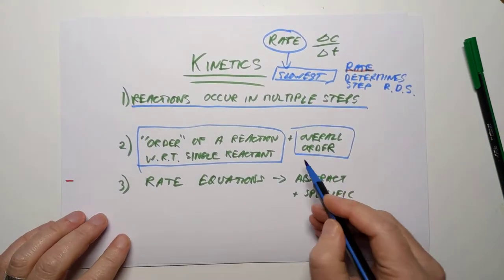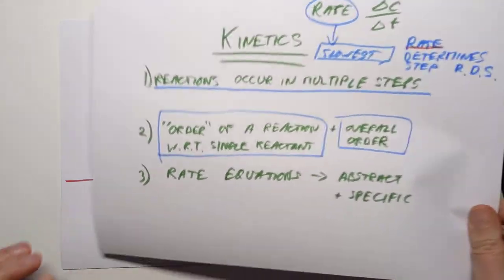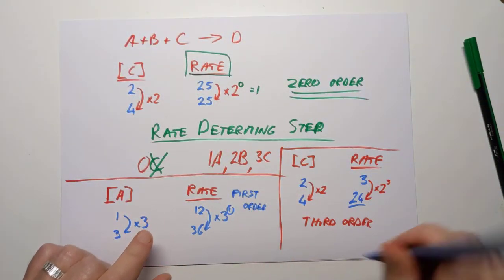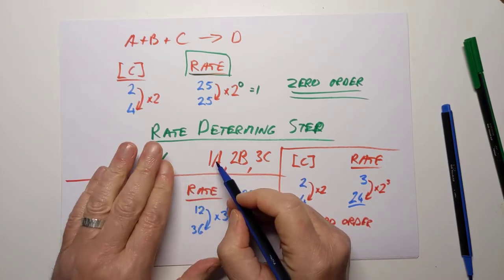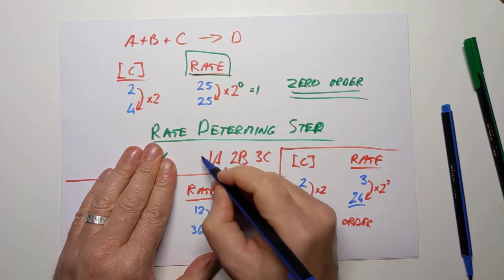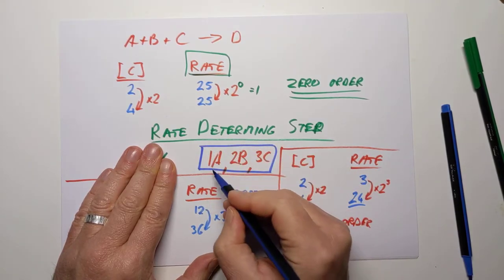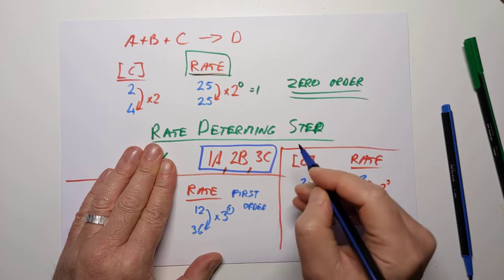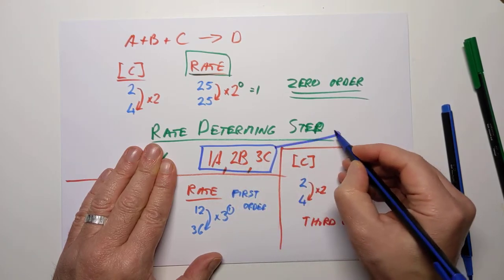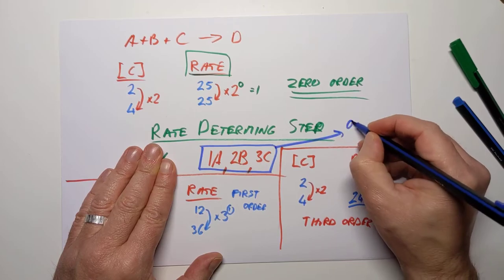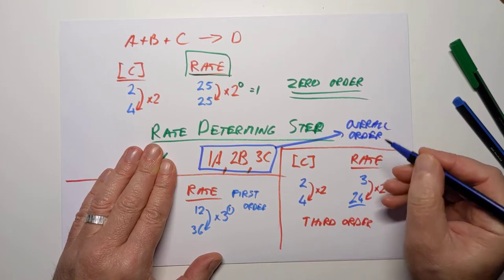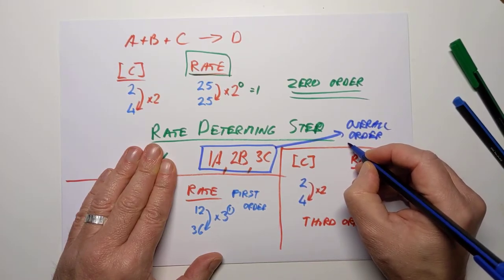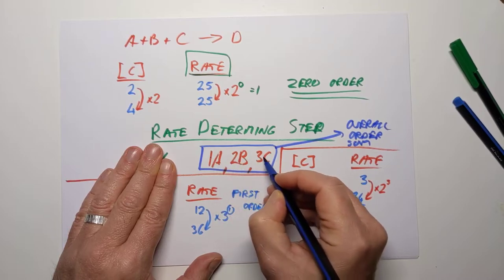The overall order of a reaction is actually easy — the overall order is simply the sum of the individual orders. So if we have first order, second order, and third order with respect to the three chemicals, the overall order is sixth. The overall order is just the sum of the individual orders.